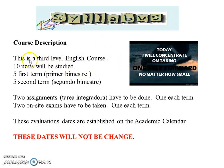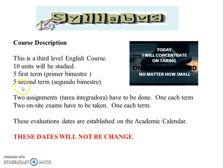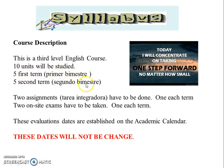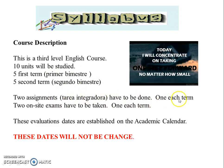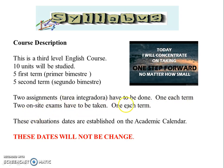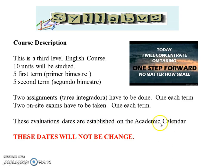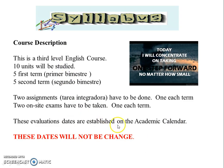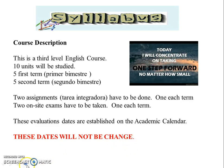Here we have a general description of the course. It is a third level English course. Ten units will be studied during the whole semester — five in the first term and five in the second. Two assignments, one each term, and two on-site exams to be taken one each term. The evaluation dates are published on your academic calendar and the dates for these exams will not be changed.